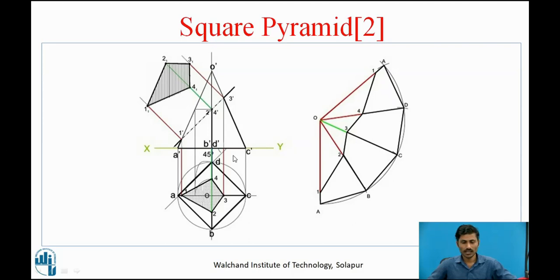If the edges are equally inclined to VP, from the top view we see that edge AD is at 45 degrees to the XY line. Similarly, CD is also at 45 degrees to VP. These two lines are also at 45 degrees to the XY line. This satisfies the condition that all the inclined edges are equally inclined to VP.